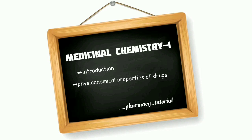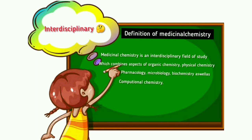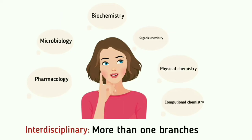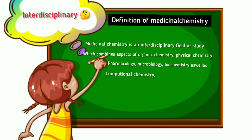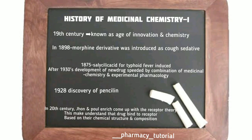In this video we are going to study about the introduction to medicinal chemistry and physiochemical properties of drugs. Medicinal chemistry is an interdisciplinary field, meaning it combines more than one branch. It consists of biochemistry, organic chemistry, physical chemistry, computational chemistry, pharmacology, and microbiology. The definition: medicinal chemistry is an interdisciplinary field of study which combines aspects of organic chemistry, physical chemistry, pharmacology, microbiology, biochemistry, as well as computational chemistry.